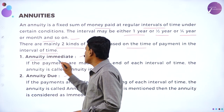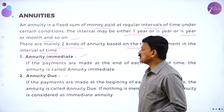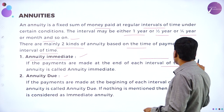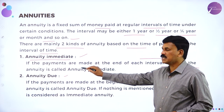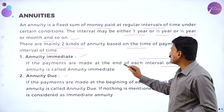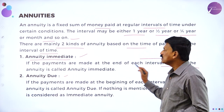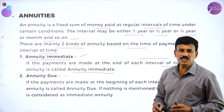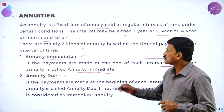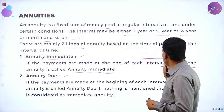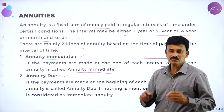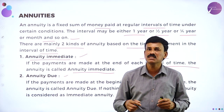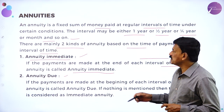Annuity immediate means if the payments are made at the end of each interval of time, then the annuity is called annuity immediate. Whatever amount you receive at the end of each interval of time is called the annuity immediate.